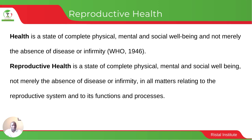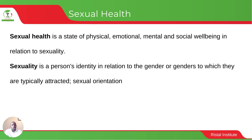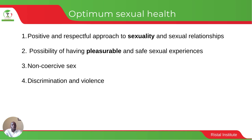Sexual health, on the other hand, also has dimensions to do with physical, emotional, mental and social well-being in matters related to sexuality. Sexuality as a term explains a person's identity in relation to gender, and is typically used to relate what one is attracted to — what we term as sexual orientation. Sexual health relates to having a positive and respectful approach to sexuality.